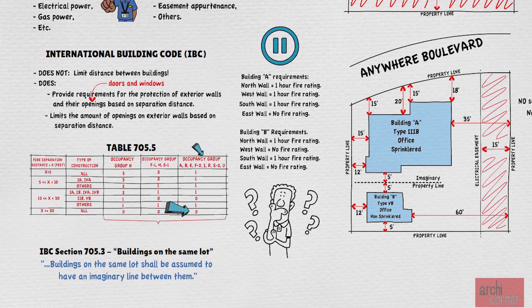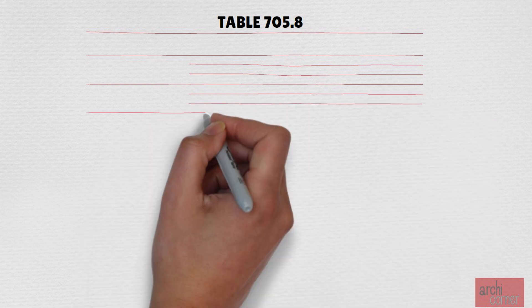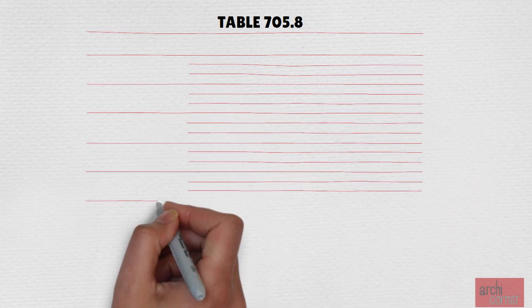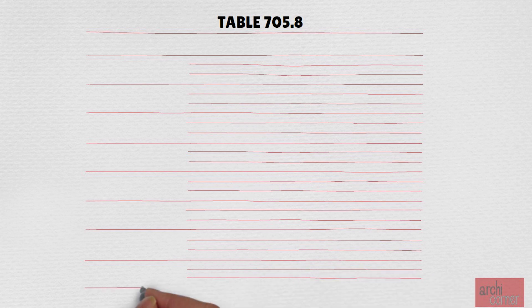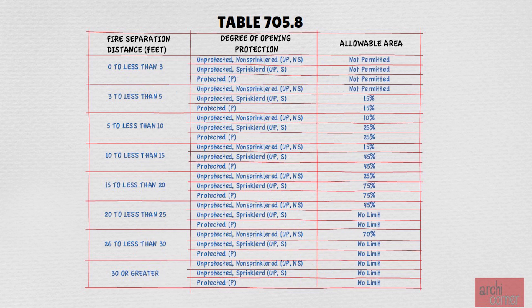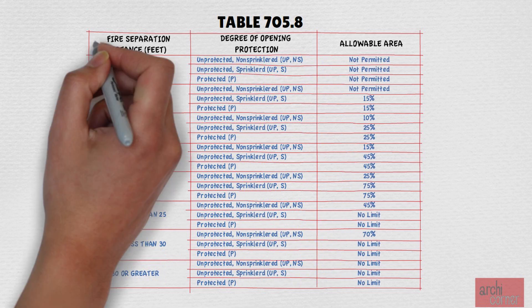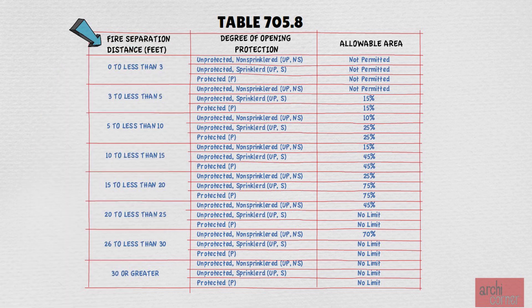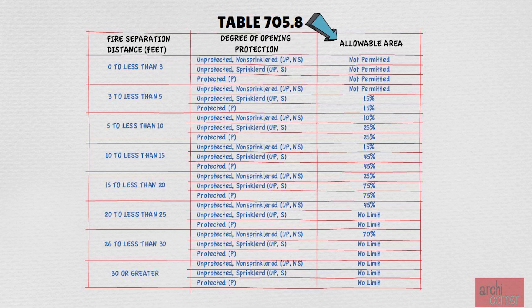But how about openings? For that, we must look at Table 705.8 of the IBC. A portion of it is shown here, and just like the last table, there are footnotes missing, so please be sure to look at the actual table in the IBC. As you can see, the first column determines the distance of the building to the property line. The second column provides options for unprotected non-sprinklered, unprotected sprinklered, and protected. Once you know the distance and type of opening protections, the third column lets us know what percentage of the wall is allowed to have openings.